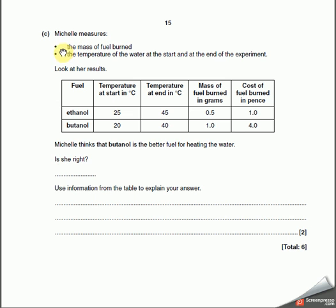Michelle measures the mass of the fuel burnt, the temperature of the water at the start and the end. You can see that. Fuel ethanol and butanol, and that's the temperature of ethanol, 25 at the start, 45 at the end. Mass of fuel burnt 0.5 grams. Cost of fuel burned in pence cost them 1 pence. Butanol starts at 20, finishes at 40, uses one gram to do it, and it costs 4p.